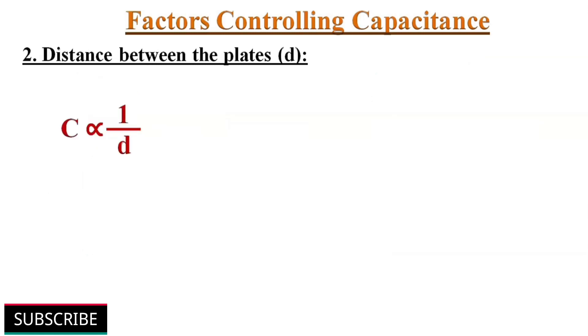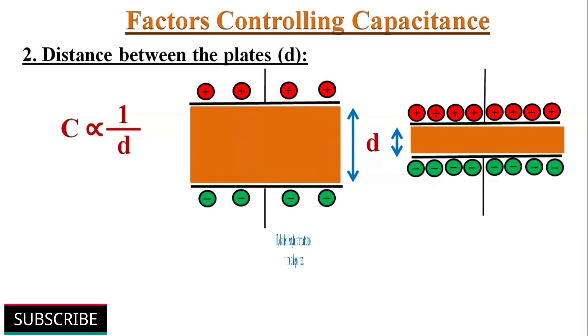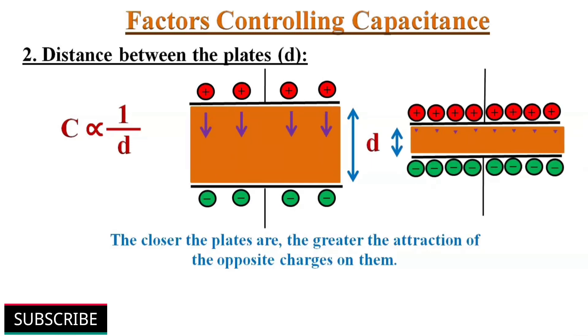On the other hand, capacitance is inversely proportional to the distance between its plates. The electrostatic field between the plates is stronger when the plates are closer together. If the distance between the plates is doubled, the capacitance will become half.